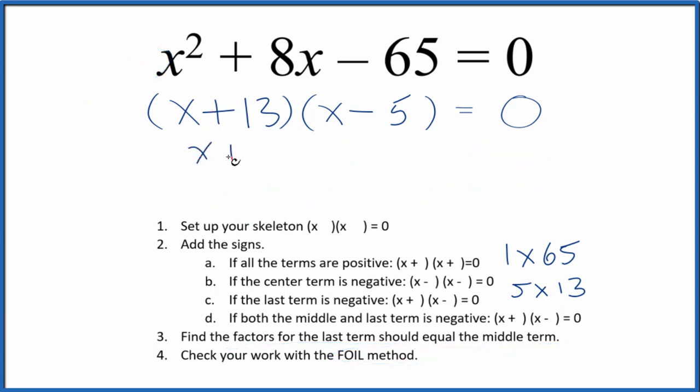So we could say x plus 13 equals 0 so x would equal negative 13, and x minus 5 that equals 0 so we could just say x equals 5. If you put 5 in for x and you do the math all of this will equal 0. Likewise if you put negative 13 in for x and you did the math this would all equal 0.